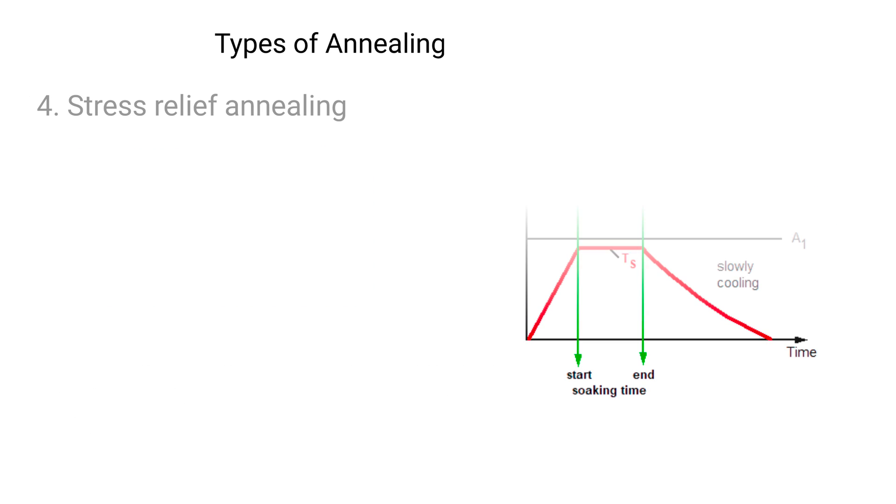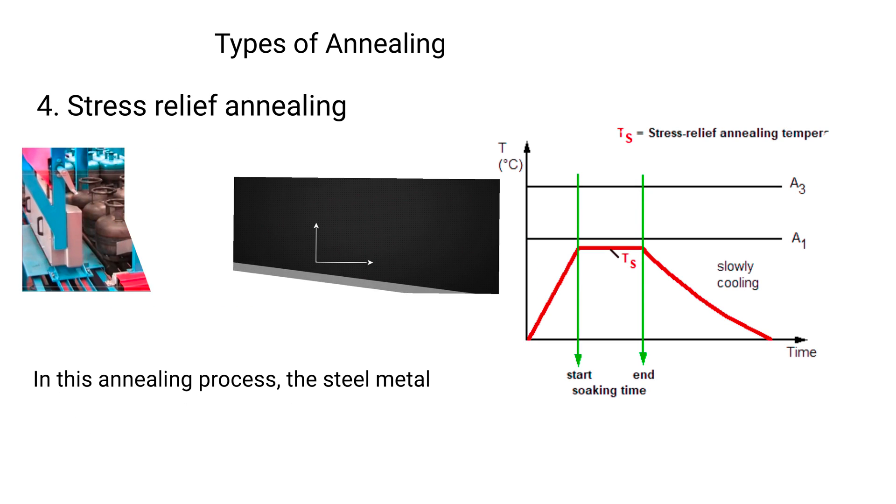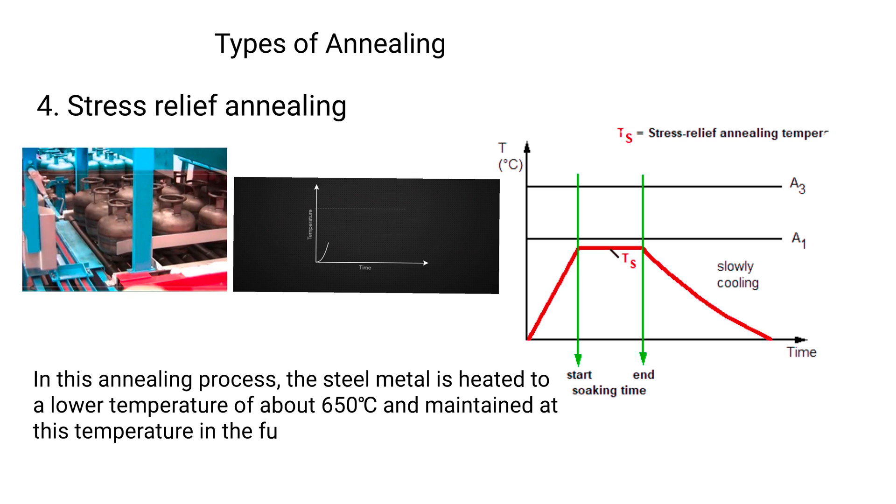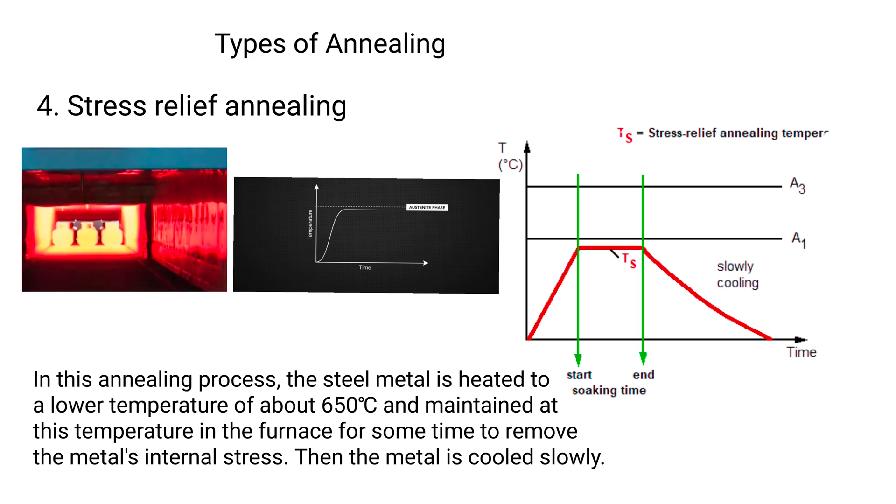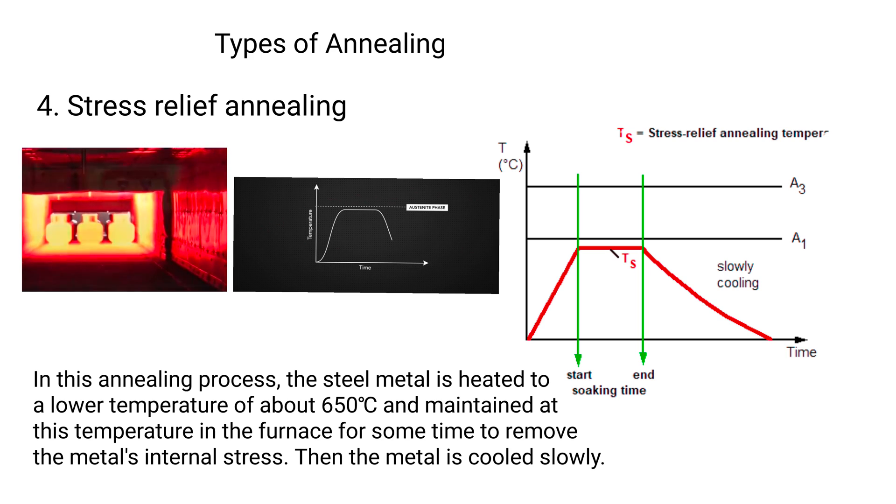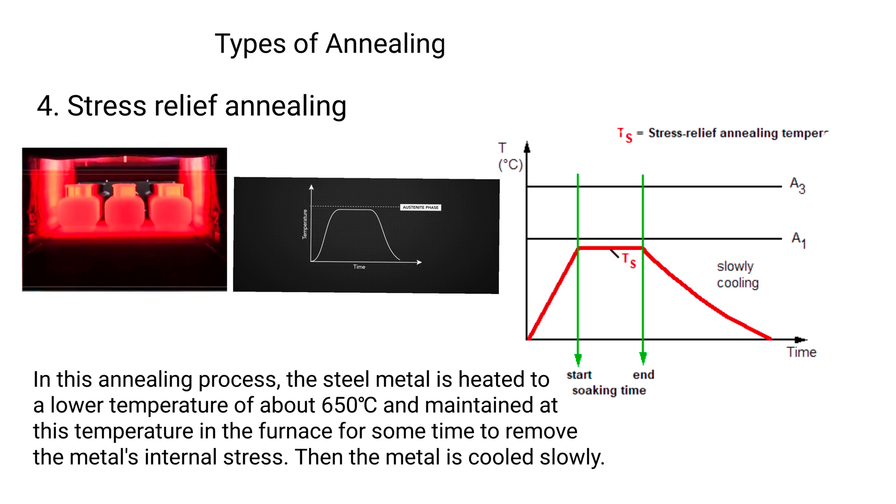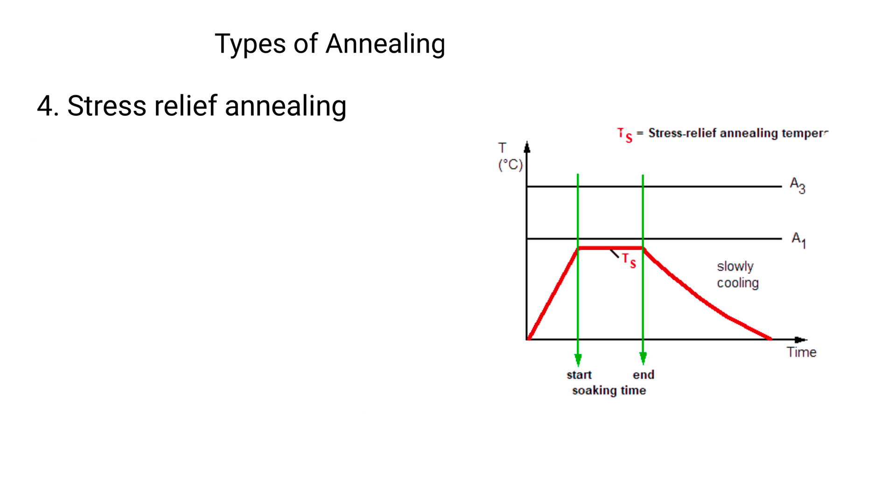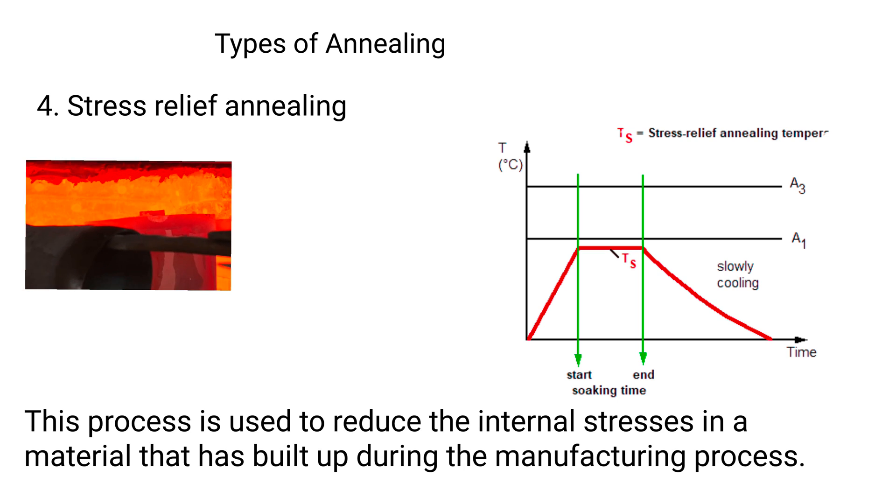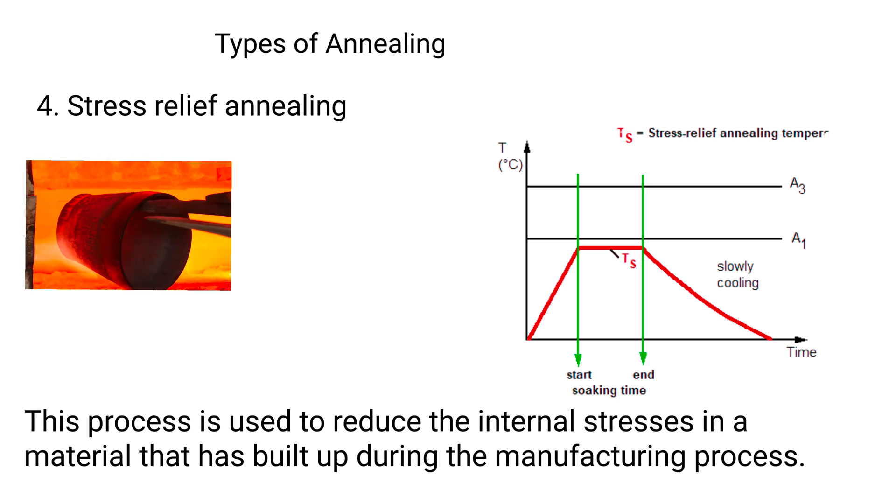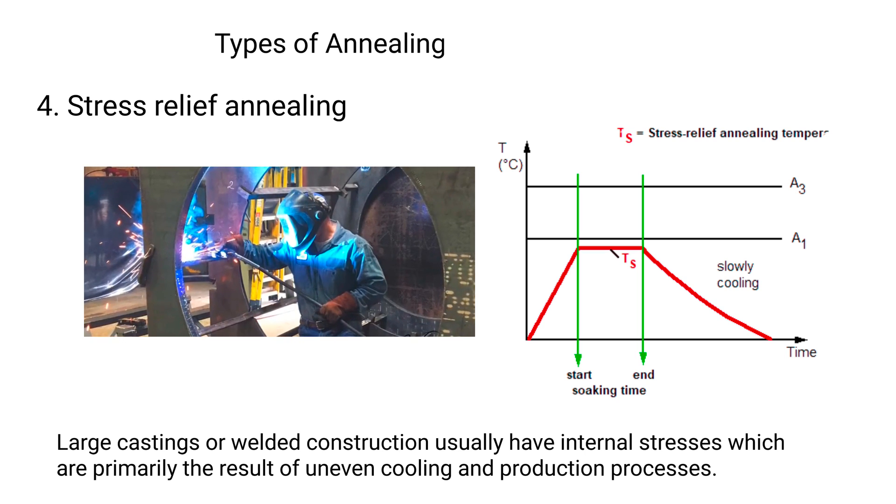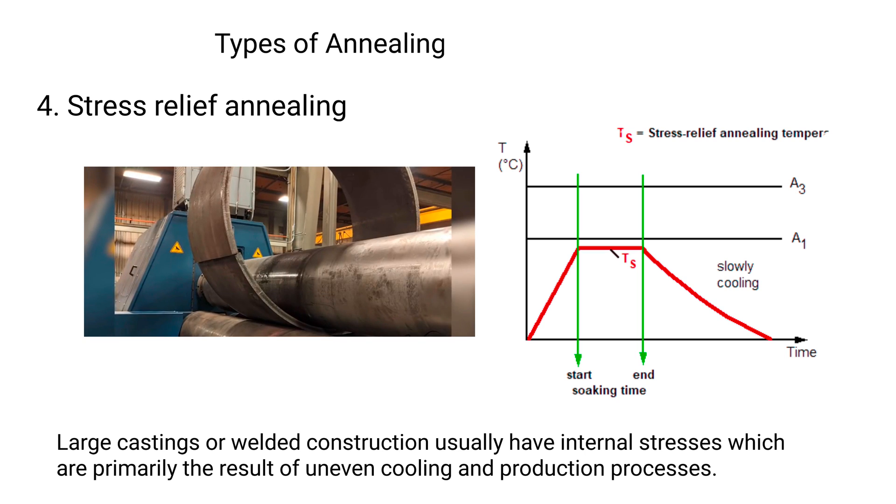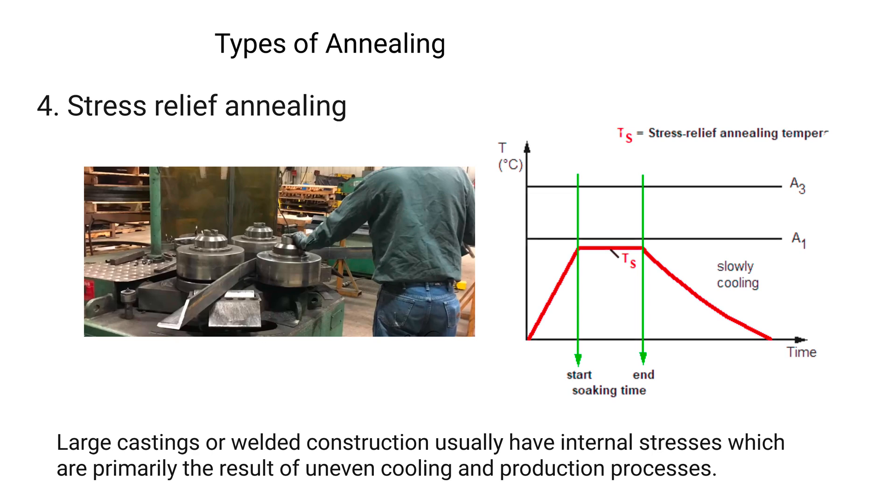4. Stress relief annealing. In this annealing process, the steel metal is heated to a lower temperature of about 650 degrees Celsius and maintained at this temperature in the furnace for some time to remove the metal's internal stress. Then the metal is cooled slowly. This process is used to reduce the internal stresses in a material that have built up during the manufacturing process. Large castings or welded constructions usually have internal stresses which are primarily the result of uneven cooling and production processes.